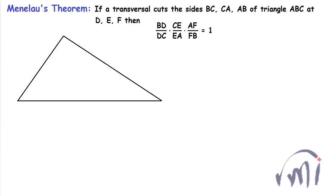So let this be the triangle ABC and the transversal. Suppose this is a transversal line. This cuts side AB at this point and side AC at this point,